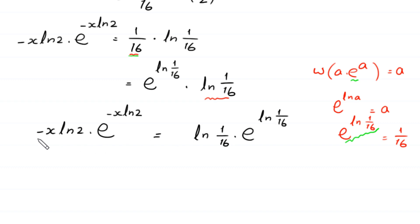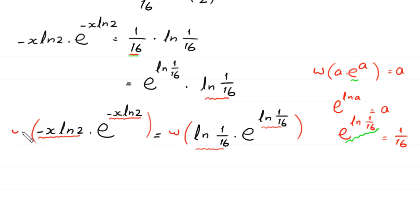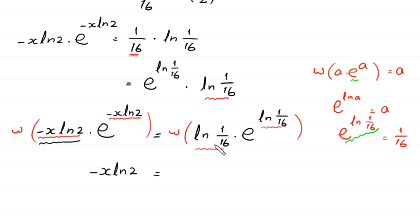Now at both sides we have matching expressions: on the left, negative x times ln of 2 and the same as the power of e; on the right, ln of 1 over 16 and the same as the power of e. So we apply the Lambert W function to both sides. The W function of negative x times ln of 2 times e to the power negative x times ln of 2 gives negative x times ln of 2 on the left, and W of ln of 1 over 16 times e to the power ln of 1 over 16 gives ln of 1 over 16 on the right.